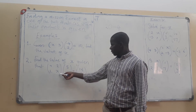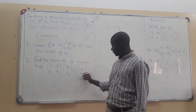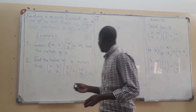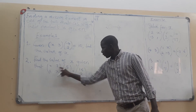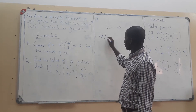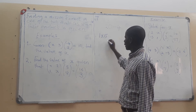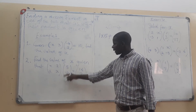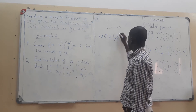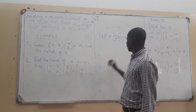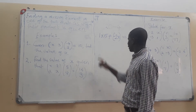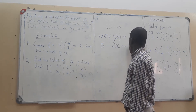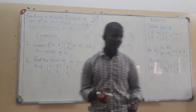Now we go to the row that contains x. This row is multiplied by this column and equated to 3 in order to find the value of x. So: 1 multiplied by 5 gives 5, plus x multiplied by negative 2 gives minus 2x. This ought to be equated to 3, giving us the equation 5 minus 2x equals 3.